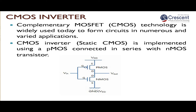The CMOS inverter — Complementary Metal Oxide Semiconductor — is a widely used technology. It is implemented using a PMOS connected in series with an NMOS. The source of PMOS is connected to Vdd, and the source of NMOS is connected to ground (Vss). The gate terminals of both are connected to the input Vin, and their drains are connected to the output Vout. PMOS is the pull-up transistor and NMOS is the pull-down transistor.